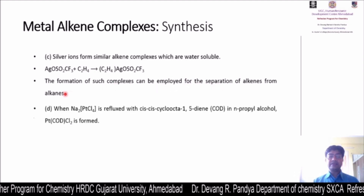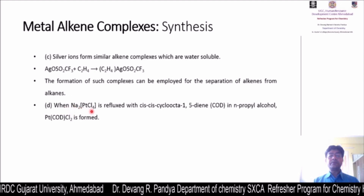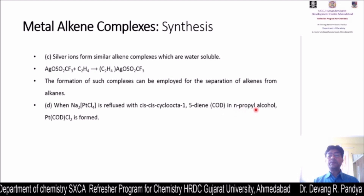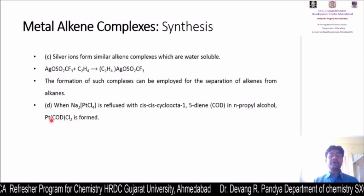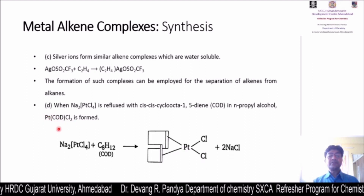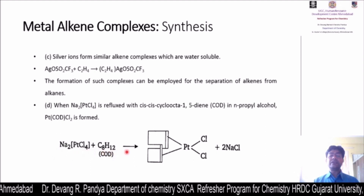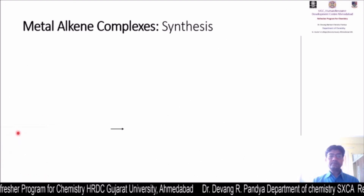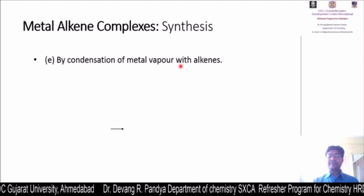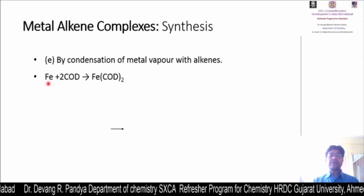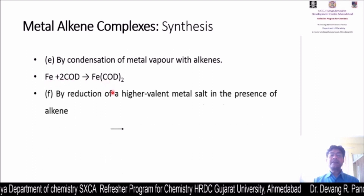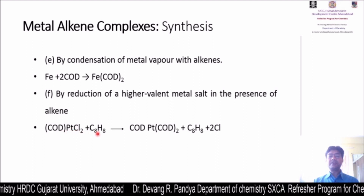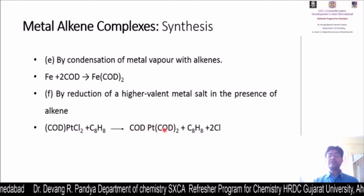Another method involves refluxing sodium tetrachloroplatinate with cis-cycloocta-1,5-diene (COD) in n-propyl alcohol, forming platinum-COD-Cl2, a metal pi complex. By condensation of metal vapor with alkenes, iron reacts with two moles of COD to give Fe(COD)2. By reduction of a high-valent metal salt in the presence of alkene, platinum dichloro-COD complex reacts with another molecule of COD, substituting two chloride ions to give Pt(COD)2.